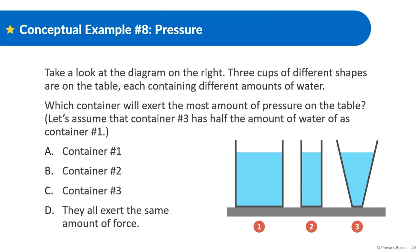Moving on — take a look at the diagram on the right again. Three cups of different shapes are on a table, each containing different amounts of water. Which container will exert the most amount of pressure on the table? Let's assume container three has half the amount of water as container one. Pressure equals force divided by area, so we should look at two things: first, which one exerts the most force on the table.